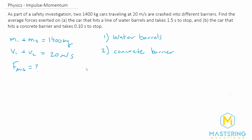First, we need to write down the formula for impulse. J is equal to the change in momentum, and it's also equal to the average force times the change in time. Since they're all equal to each other, we're going to use the last two: the change in momentum is equal to the average force times the change in time.